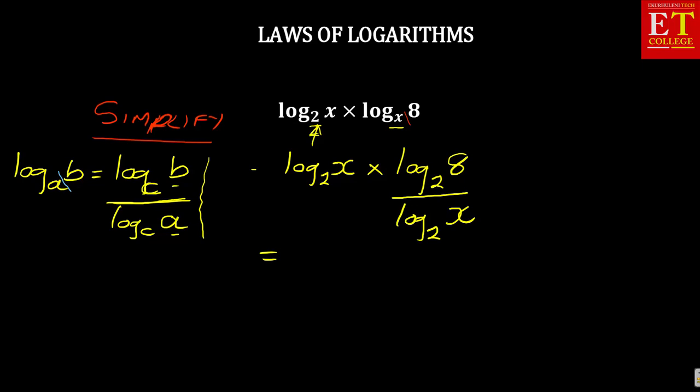And then with that, it simplifies further to become log base 2 of X times. Now, the interesting part is our 8 here. What is our 8? 8 is the same as 2 to the power of 3. 2 times 2 times 2 is 8. So you are going to rewrite that as log base 2 of 2 to the power of 3 all over log base 2 of X.